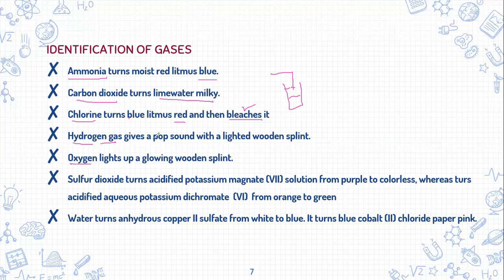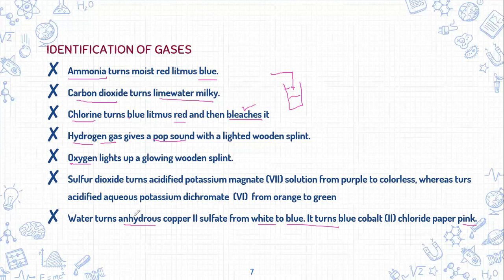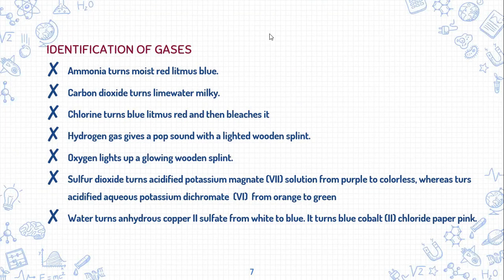Sulfur dioxide turns acidified potassium manganate from purple to colorless, and turns acidified aqueous potassium dichromate from orange to green. For the water test, water turns anhydrous copper sulfate crystals from white to blue — anhydrous means it is dried up and does not contain water molecules. Water also turns blue cobalt chloride paper into pink. These are the distinctive features — just revise them and this will be very helpful for your exams.